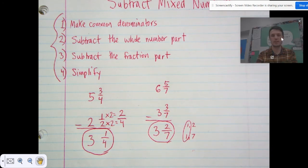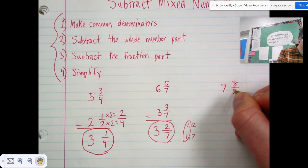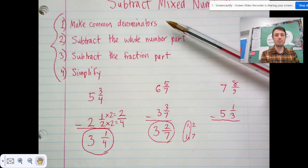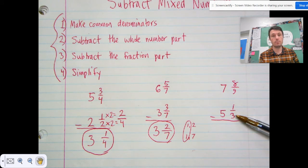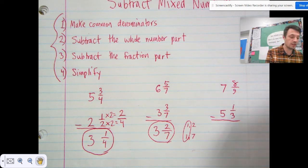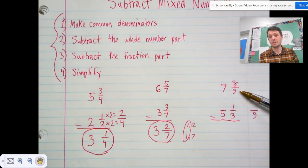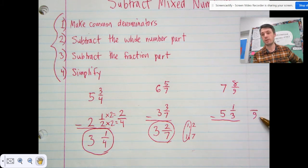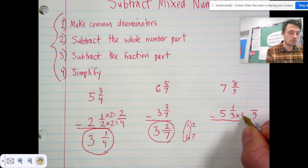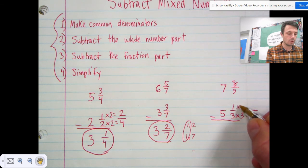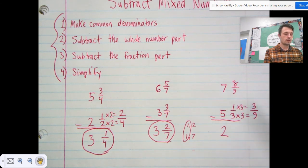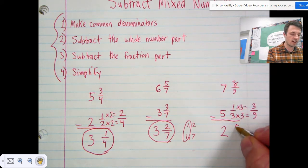Let's do another one. Seven and eight-ninths minus five and one-third. Step one: make common denominators. Eight-ninths and one-third are not like fractions. The LCM is nine because three can evenly fit into nine. Eight-ninths already has nine as its denominator, so we only need to change one-third to have a denominator of nine. We multiply: three times three equals nine, and whatever we do to the bottom we do to the top — one times three is three. Step two: subtract the whole number part — seven minus five is two. Step three: subtract the fraction part — eight-ninths minus three-ninths is five-ninths.